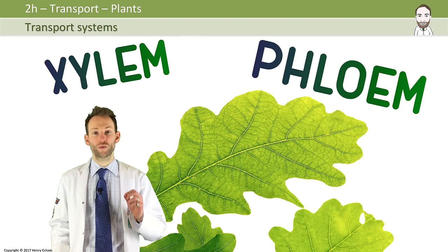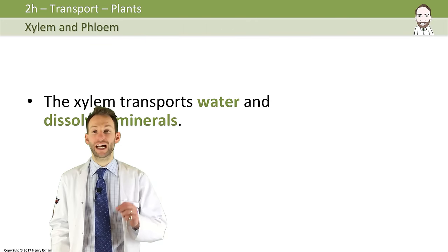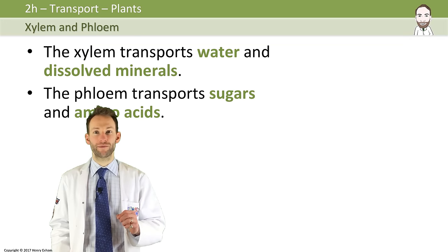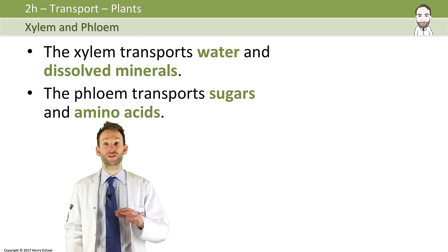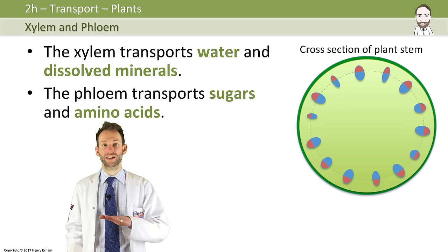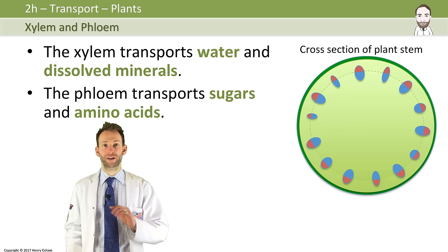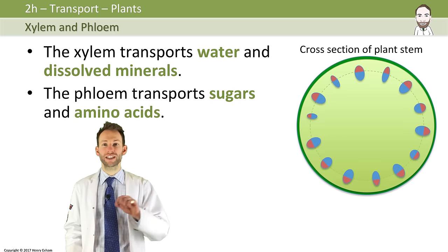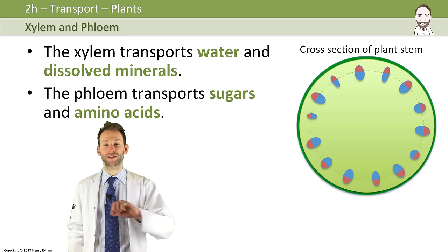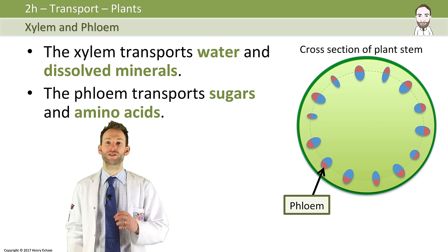The xylem transports water and dissolved minerals, and the phloem transports sugars and amino acids. Here's a cross-section of a stem, so cut straight through a plant's stem. You can see the vascular bundles arranged around the outside. This gives the stem some structure and support.